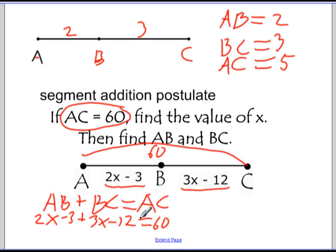And now we can solve that equation and find out the value of x and the measure of AB and BC. So solving that equation, I'll combine some like terms, and we get 5x minus 15 equals 60. Add the 15 to both sides, we get 5x equals 75. x equals 75 divided by 5, which is 15.